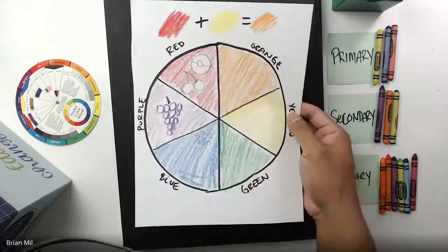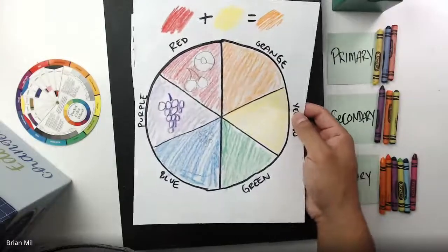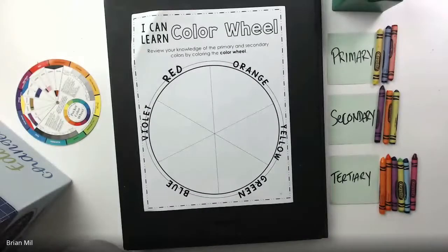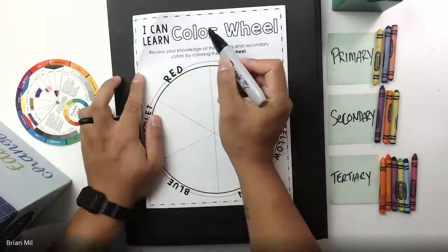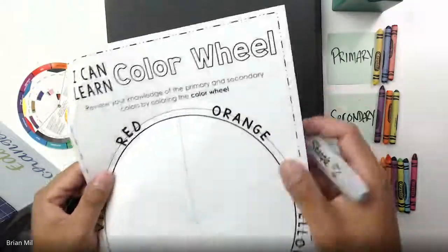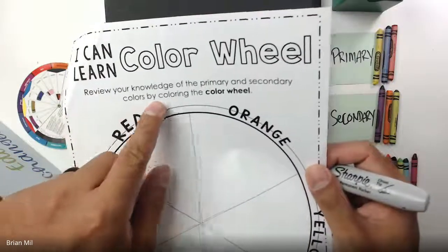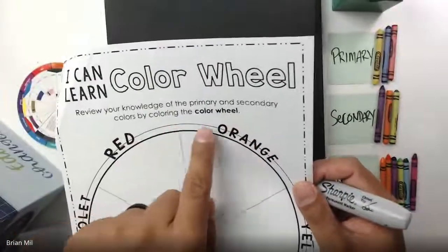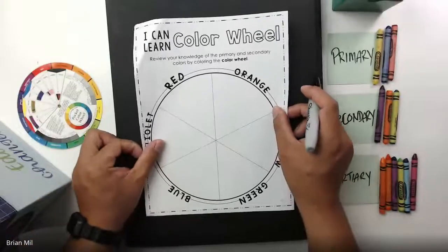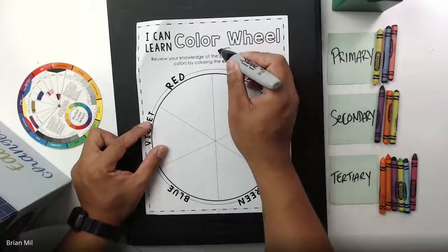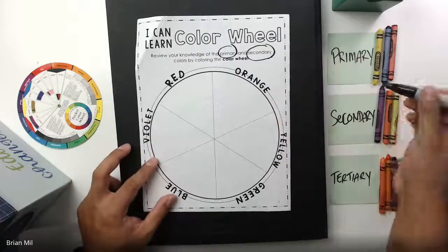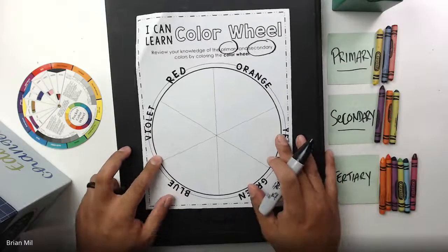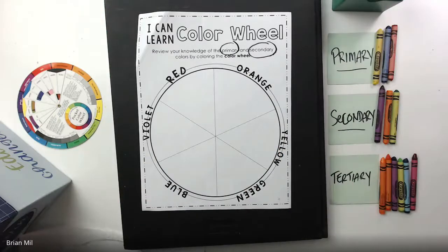I did do it last class with my other kindergarten class I just had a couple minutes ago, so this is what it looks like, but we're going to go over it together right now. It says I can learn the color wheel, and then it says review your knowledge of the primary and secondary colors by coloring the color wheel. So we're going to go over two things on this project: the primary colors and also the secondary colors. I did write them out right here for you guys as well.